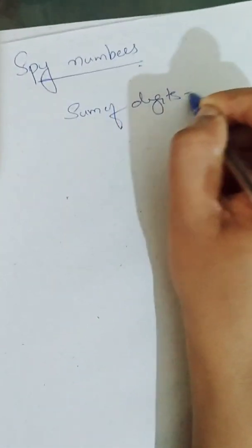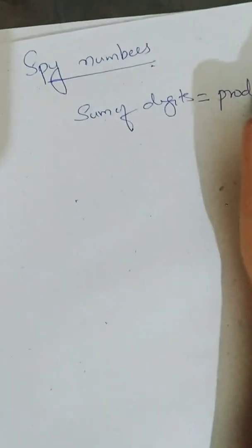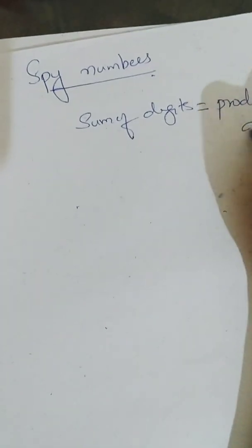Today we are going to discuss spy numbers. What is a spy number? A spy number means the sum of the digits of a number should be equal to the product of the digits of a number.